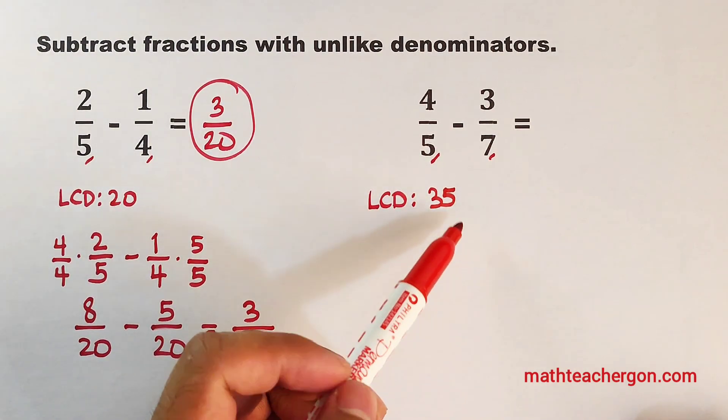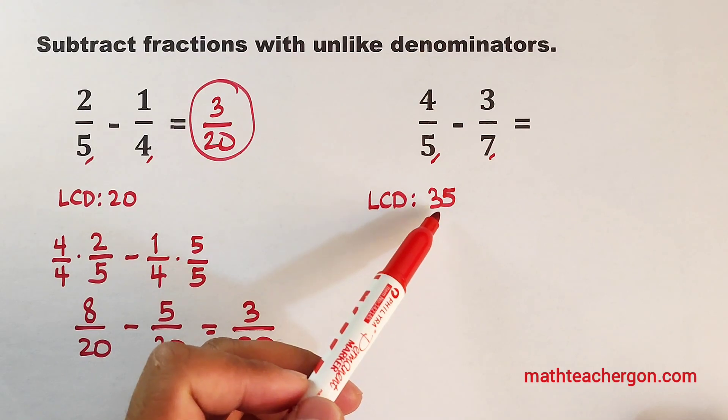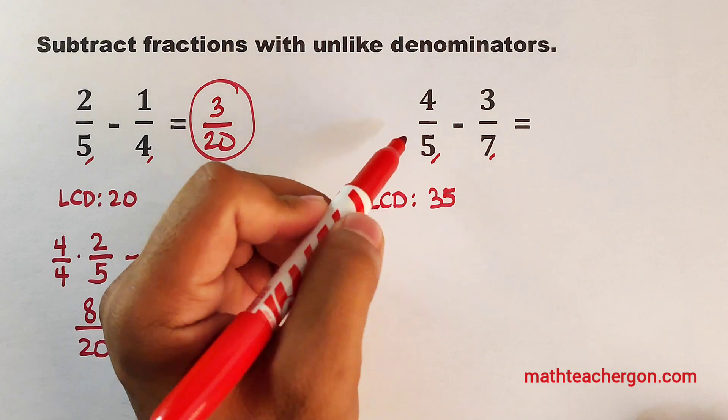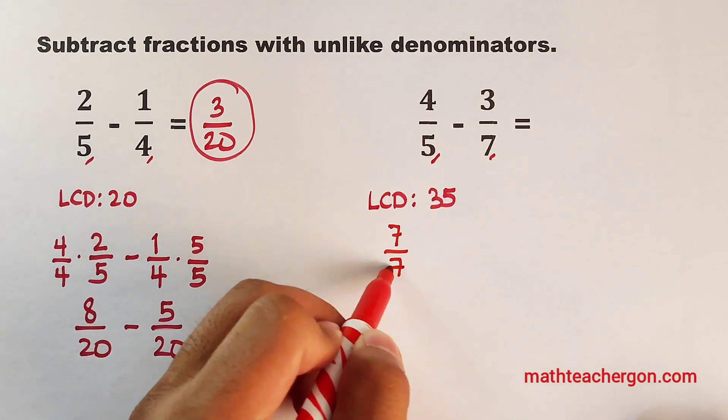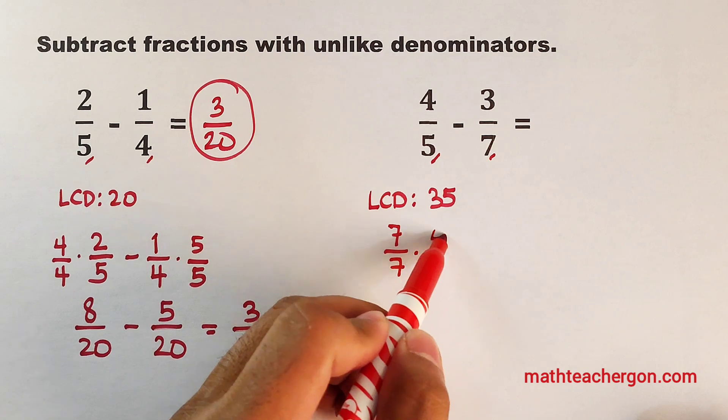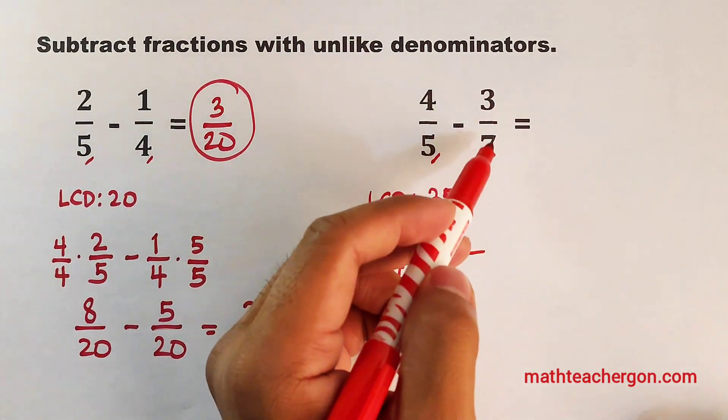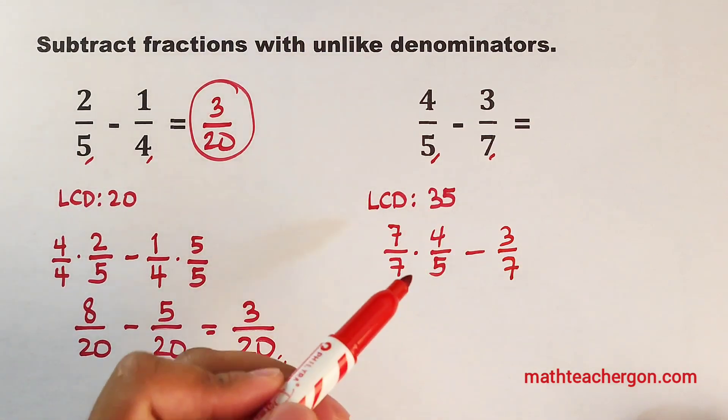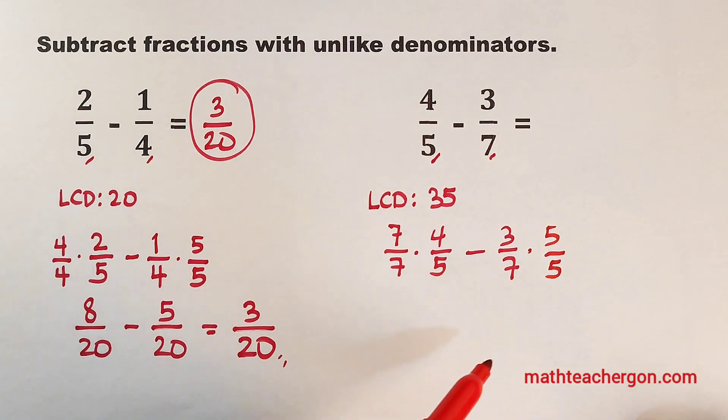So now, we will think of number that we need to multiply to 5 to make it 35. Okay, that's correct. We will multiply it by 7. So this must be 7 over 7 times 4 over 5. Then minus, copy your 3 over 7. So definitely, you know the answer, that we need to multiply 3 over 7 by 5 over 5. And let's try to simplify this.